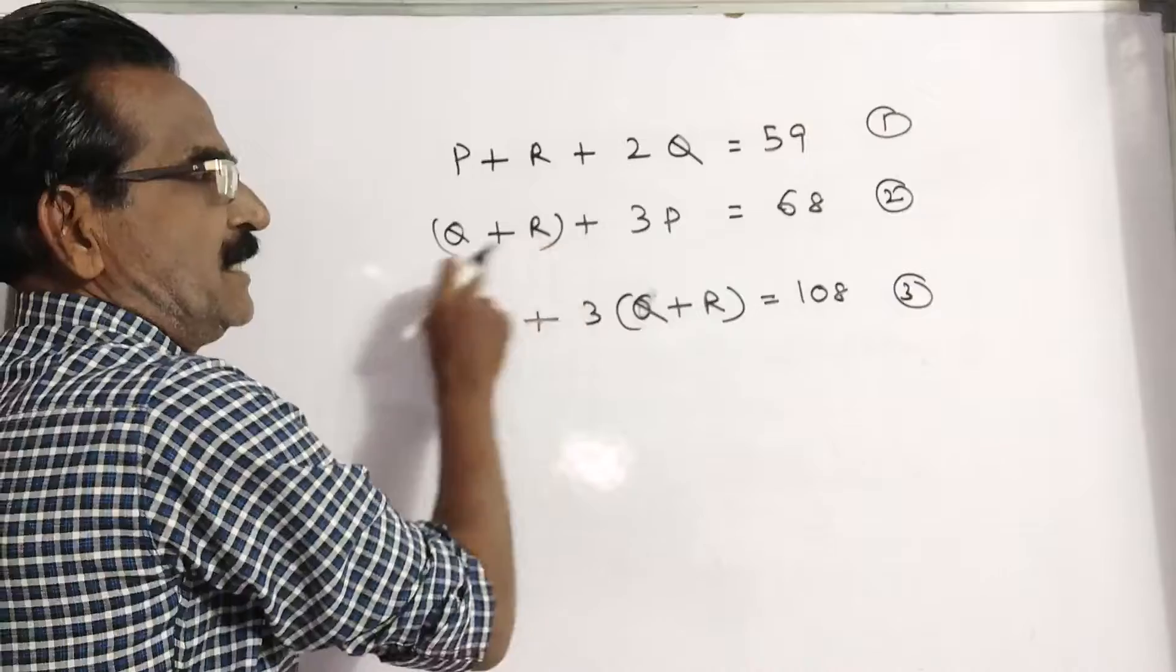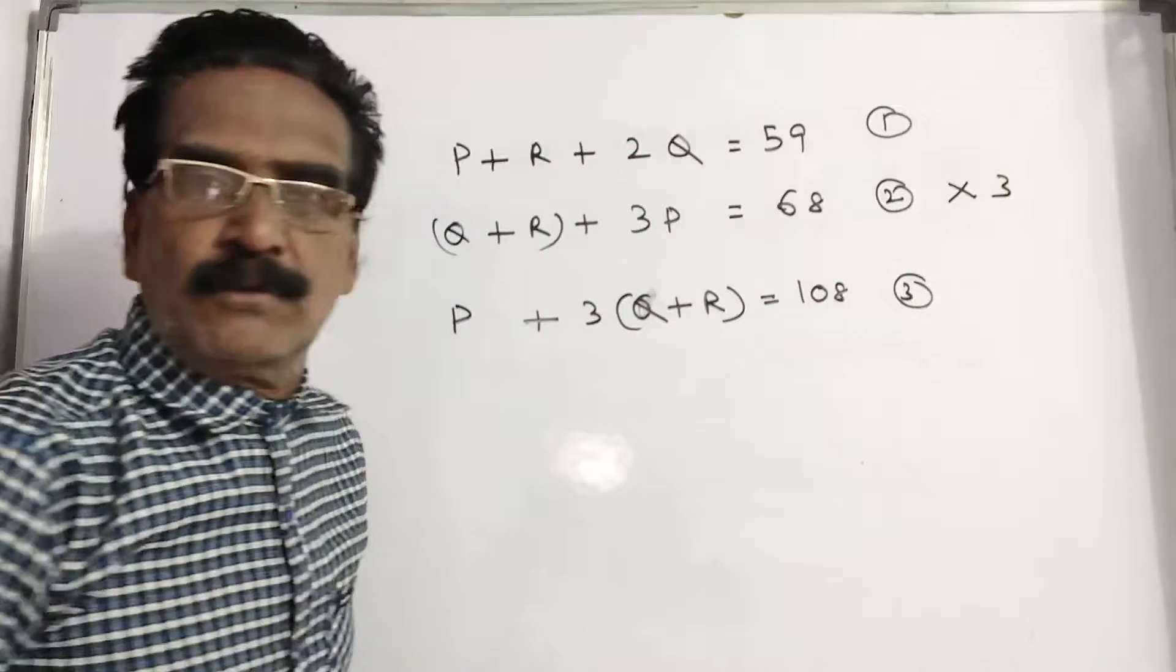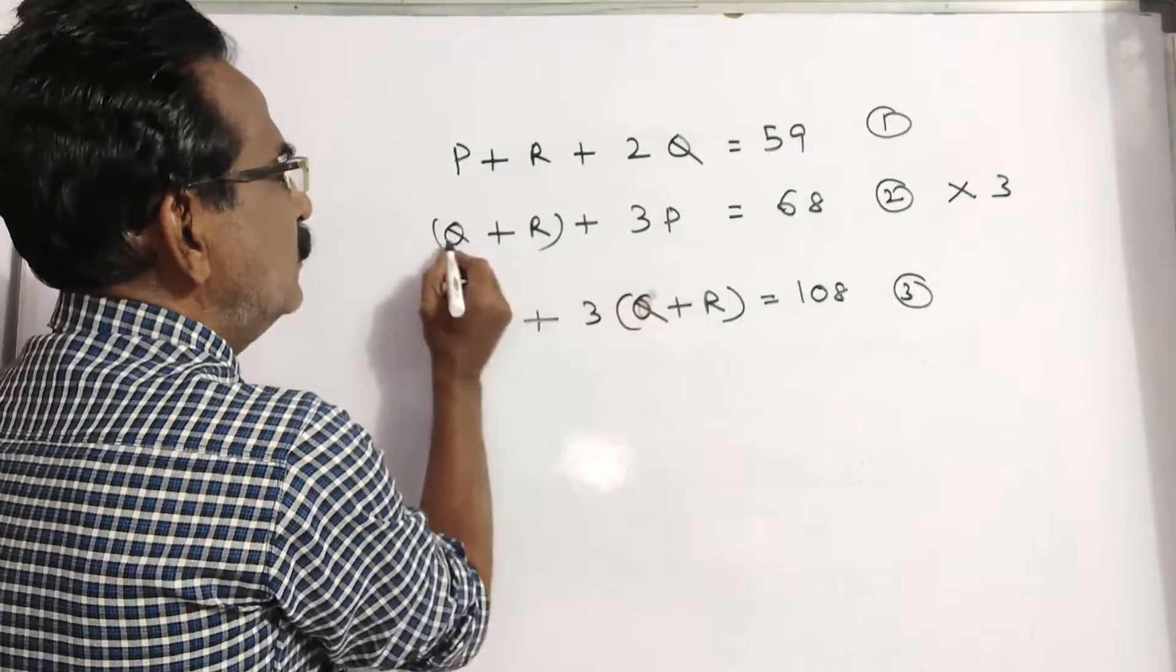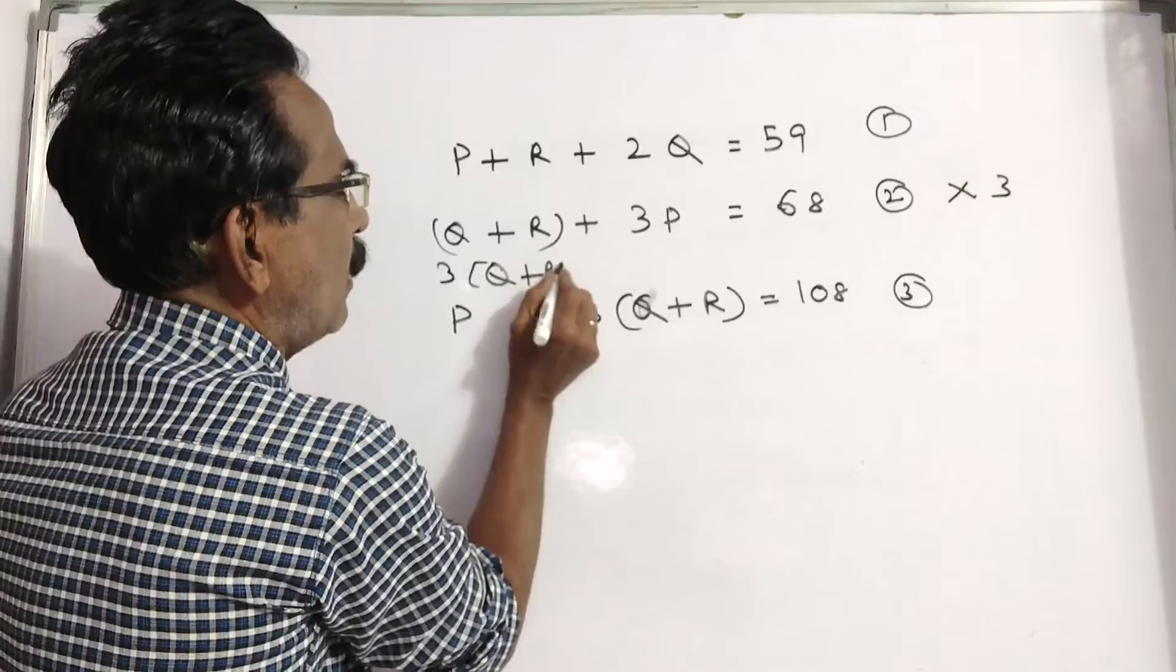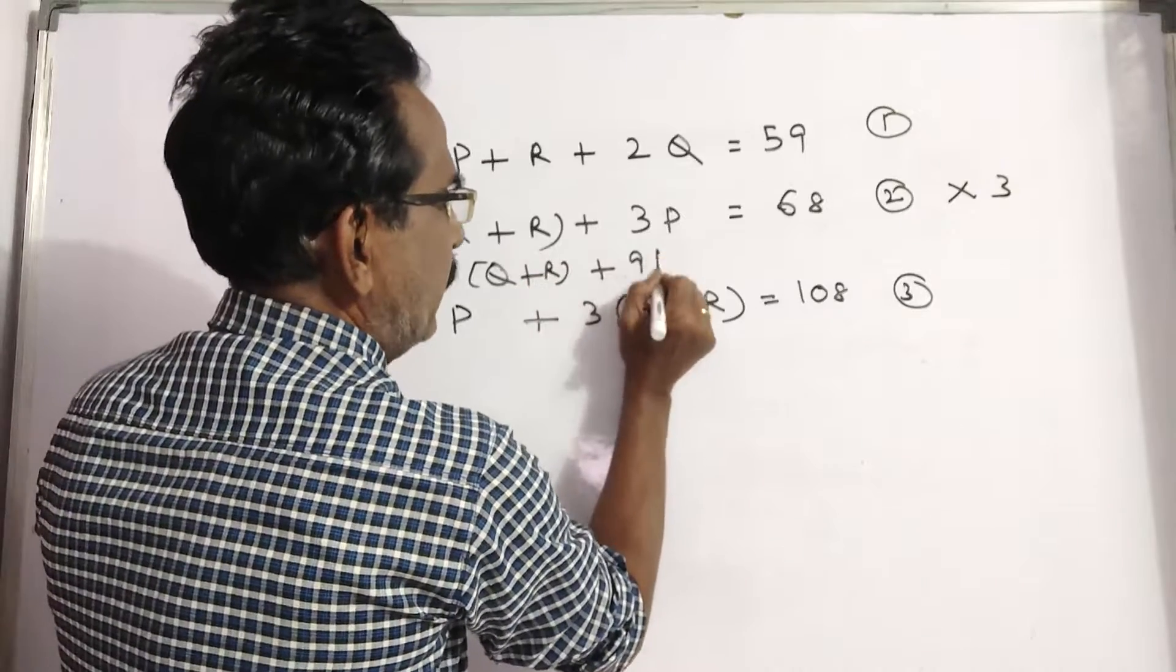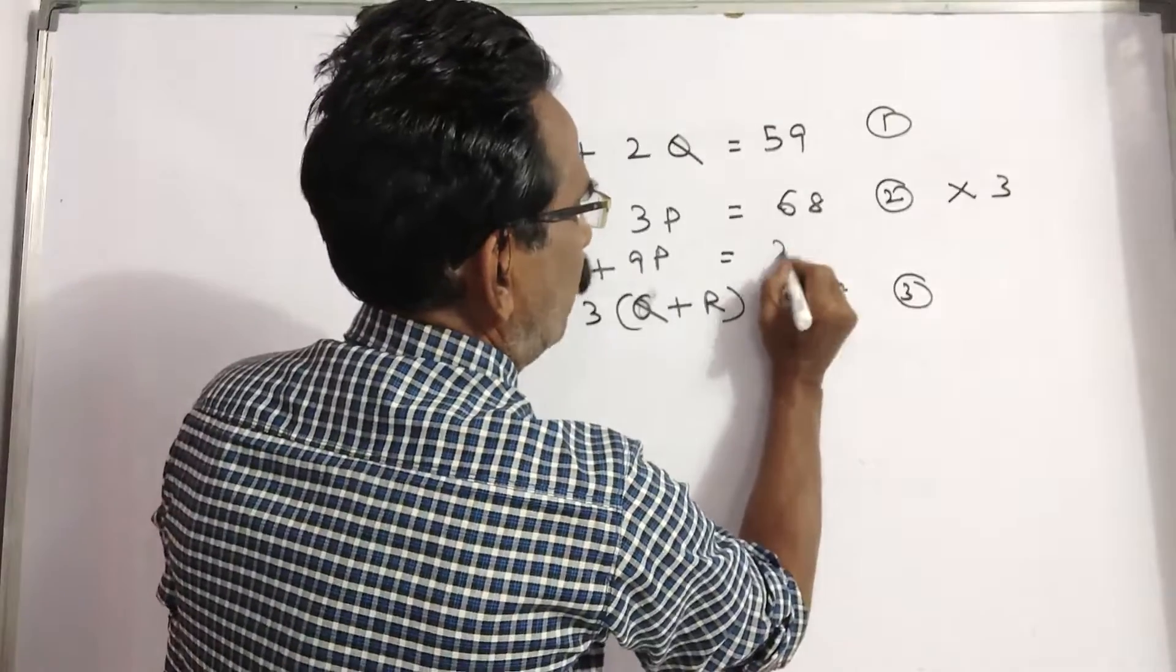Let us multiply the second equation with 3. Equation 2 into 3. Then 3 into Q plus R, plus 3 into 2P, that's 6P, is equal to 3 times 68. 180 plus 24, 204, not 4.